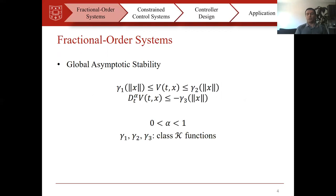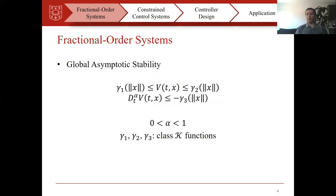In order to prove the stability of an equilibrium point in fractional order systems we can use Lyapunov theory. If we can find a Lyapunov function that is positive and zero only at the equilibrium point and its derivative is negative, the equilibrium point is asymptotically stable. If these properties hold globally, that equilibrium point is globally asymptotically stable. Please note that in fractional order systems we should use the fractional derivative to prove the stability.